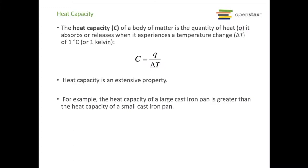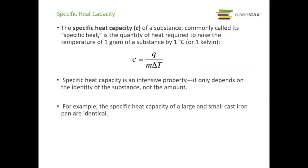Now let's talk some more terms. The heat capacity with a capital C of a piece of matter is the quantity of heat q that's released when it experiences some change in temperature delta T of one degree Celsius or one kelvin. This is an extensive property. That means it depends on things like your size, the actual temperature change, the amount of whatever it is you're looking at. For example, a large cast iron pan is going to have a greater heat capacity than a small cast iron pan even though they're made of the same material.